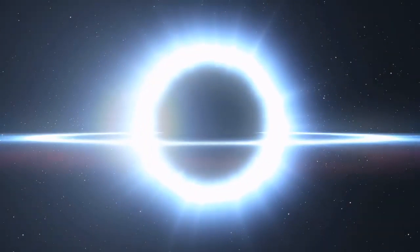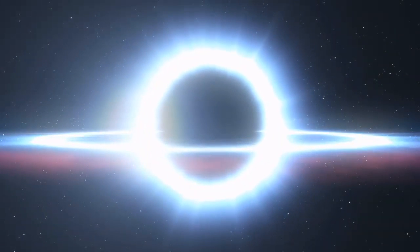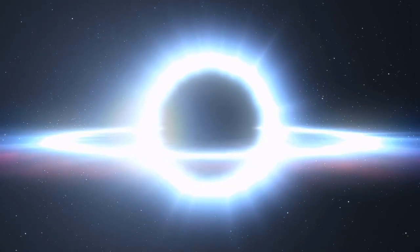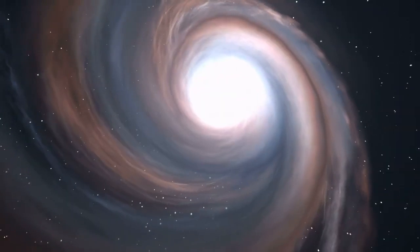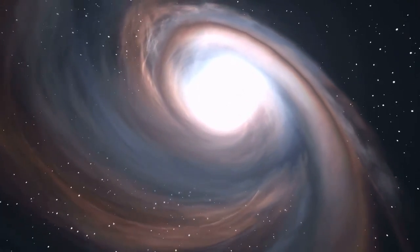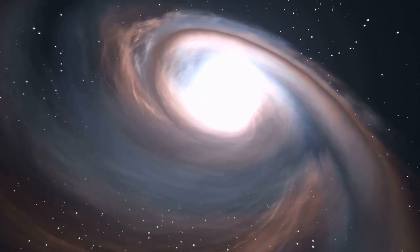For example, the cyclic universe theory suggests that the universe goes through continuous cycles of creation and destruction, with each cycle ending in a big crunch and beginning with a big bang. This theory would imply that the universe does not have an absolute beginning or end, but is eternal and dynamic.